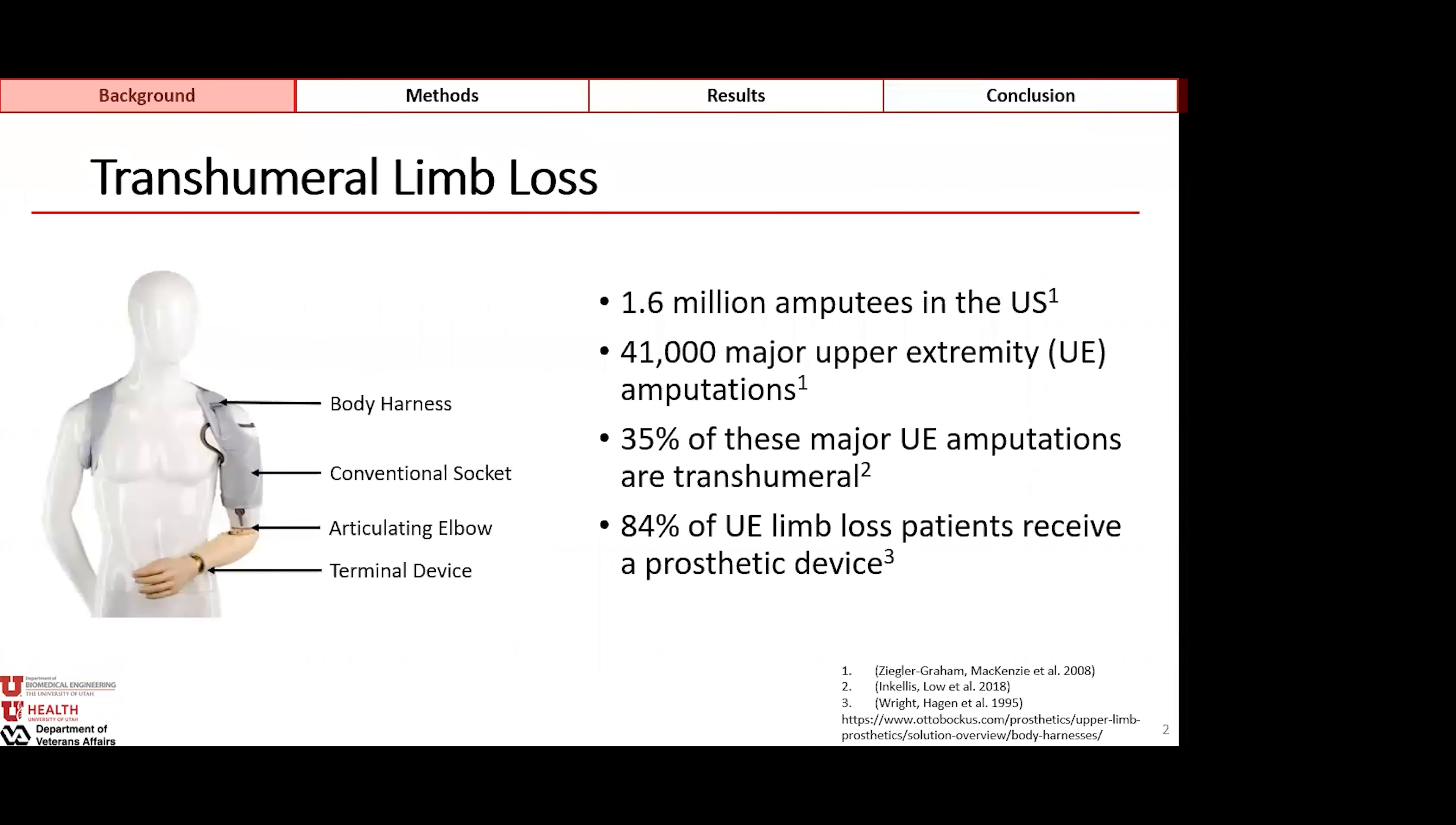The transhumeral limb loss population makes up about 35% of all major upper extremity amputees, and similar to the rest of the upper extremity limb loss population, they receive upper extremity prosthetic devices at an incredibly high rate. At the current state, individuals with transhumeral amputations will receive something similar to the setup that we see here on the left side of the screen, which is a conventional socket to go over the soft tissue of the residual limb.